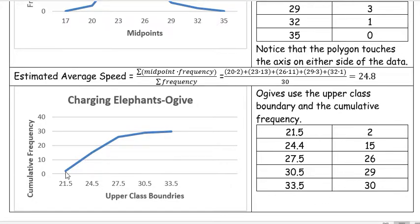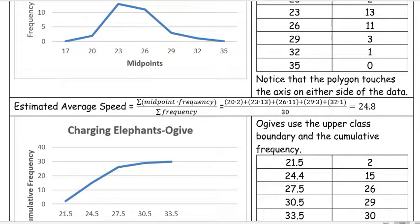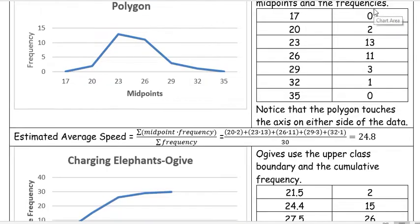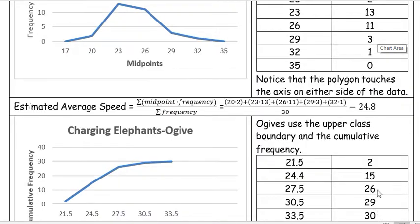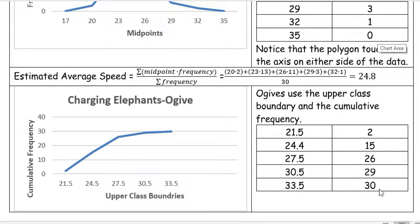Then we are cumulative here. You can see we started off with 2, and then we had 13. So we had 2 and then we add 13, that's how we get 15. Then we had 11, so we add 11 to 15, that's how we get 26. We're just adding those up.